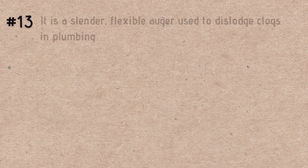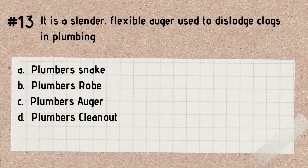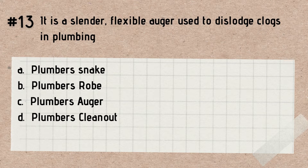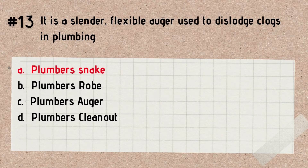Question number 13. It is a slender, flexible logger used to dislodge clogs in plumbing. A. Plumbers snake. B. Plumbers robe. C. Plumbers auger. D. Plumbers clean out. Answer: Plumbers snake. Again, a plumbers snake is a slender, flexible logger used to dislodge clogs.